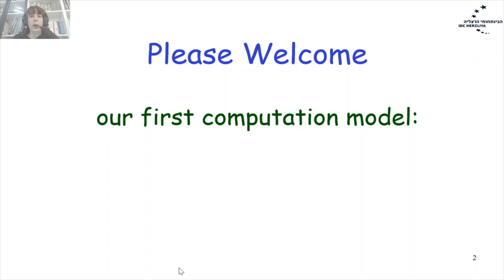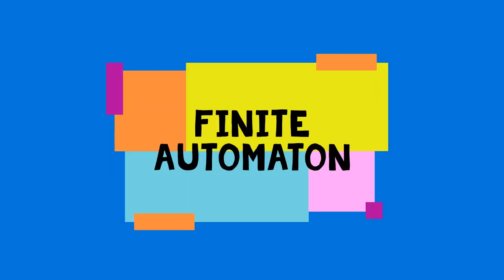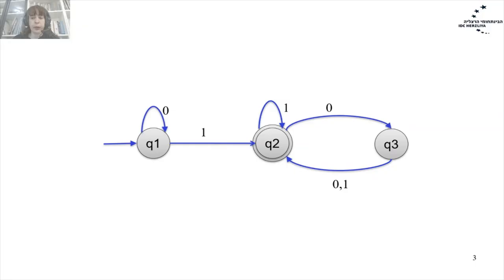Today we will start talking about our first computational model: Finite Automata. Let's start with an example. We have here an example of a Finite Automaton with three states named Q1, Q2, and Q3.